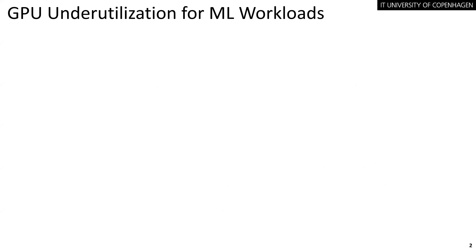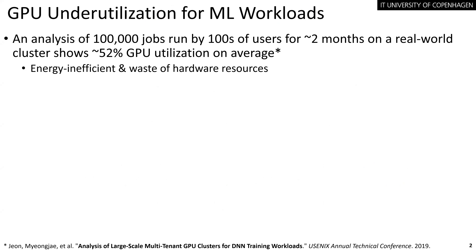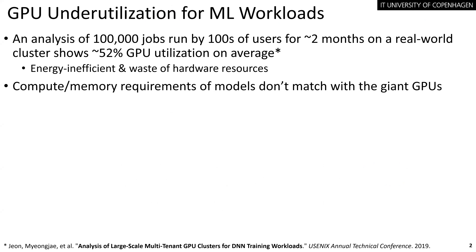These days, we observe that GPUs are suffering from an underutilization problem. A study on a lot of jobs submitted by several users on a real-world cluster shows only around 52% GPU utilization on average, which is energy inefficient and indeed a waste of hardware resources. It is because the compute and memory requirements of the models we are training do not match with the modern giant GPUs we have.